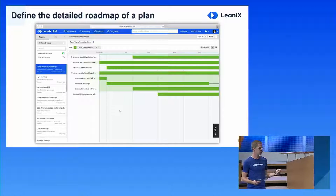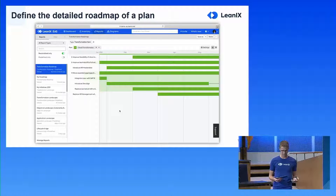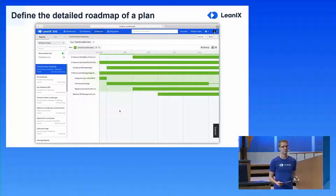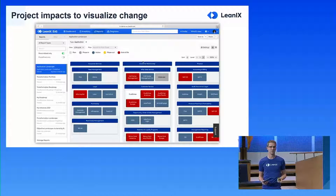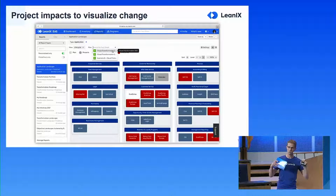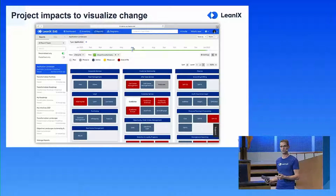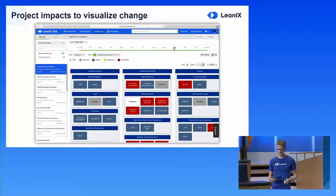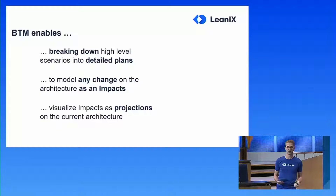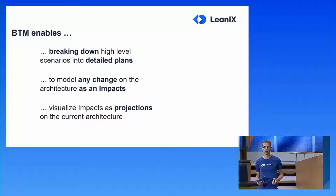Now that we understand the timelines and when certain things will be implemented, let's look at how that actually affects my architecture. We're jumping into the application landscape. You see the similar plan picker box — you can now select a certain scenario, and you will see all the lower-level architectural changes on the application landscape that will happen as part of that plan. I can also see all the interval steps and look at how my architecture will look in January, February, March, April, or at the end of the plan.